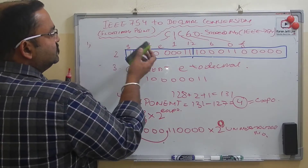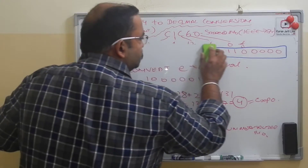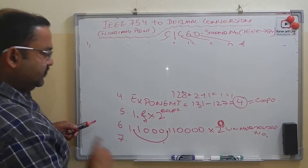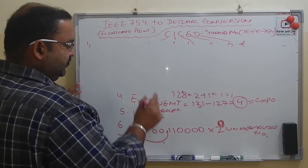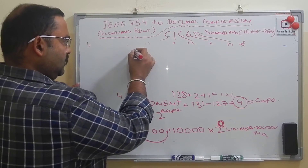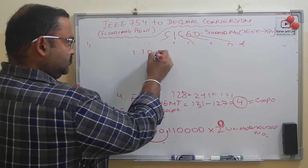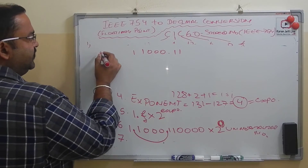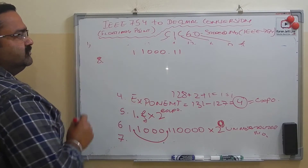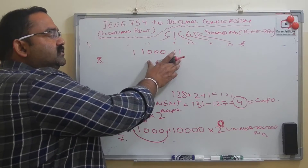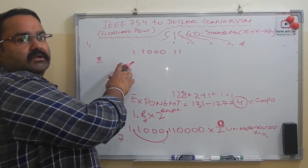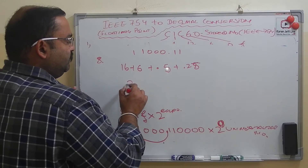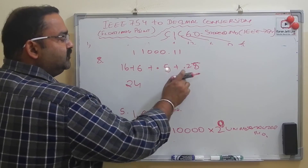Now we take the unnormalized number. Step eight: convert this number to decimal. The unnormalized number is 11000.1, which gives us values of 24 and 0.5, adding up to give a result around 24 plus 0.5 plus 2, which is approximately 26.75.